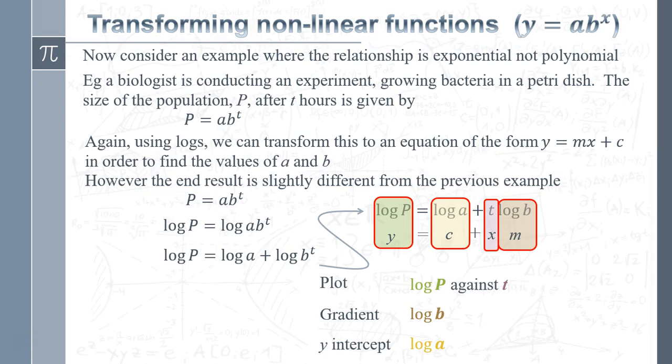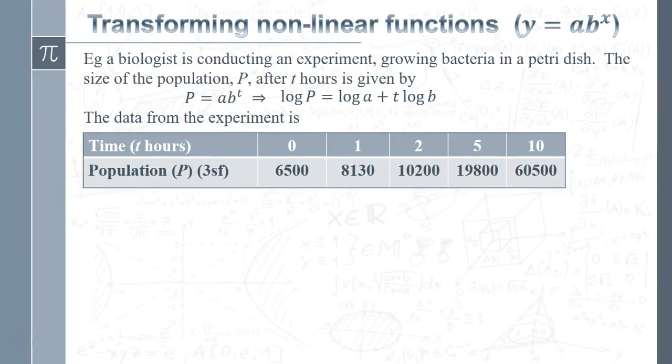So let's just have a little look at some numerical data now for this experiment. There we go - we've got our data, we've taken our relationship P = ab^t and we've transformed it, and we know we've got to plot log P against t. So I don't need to take logs of t at all.